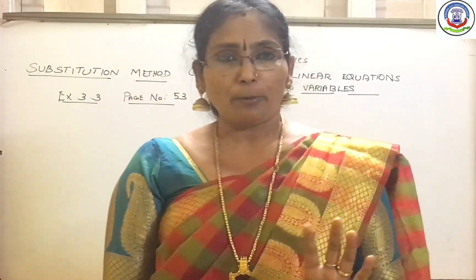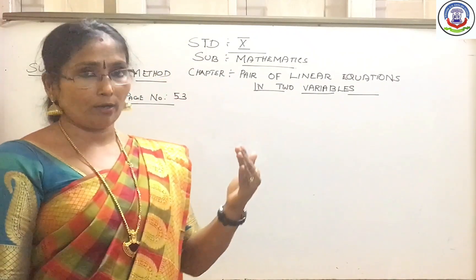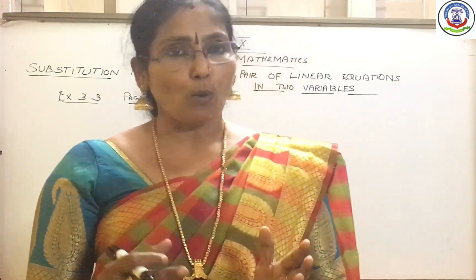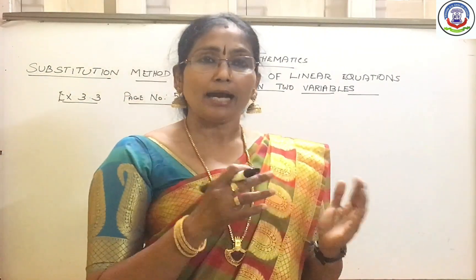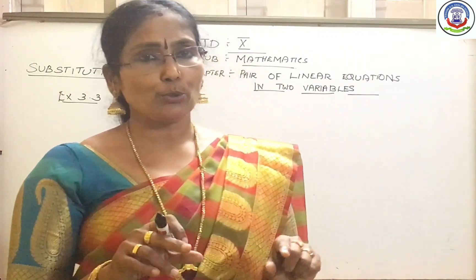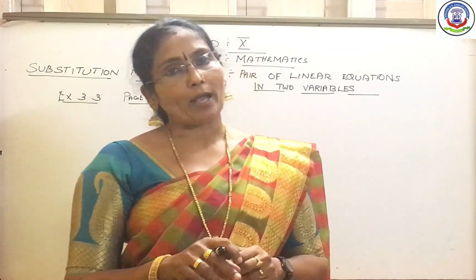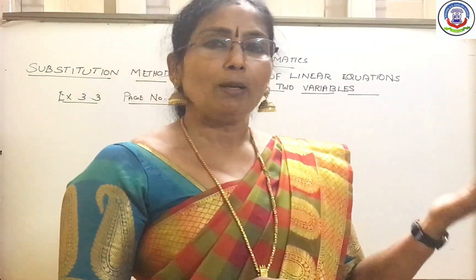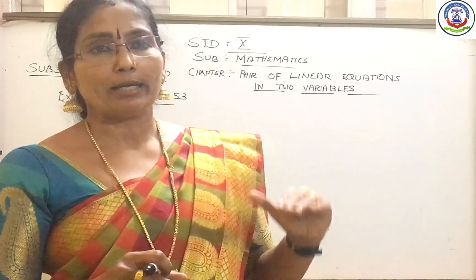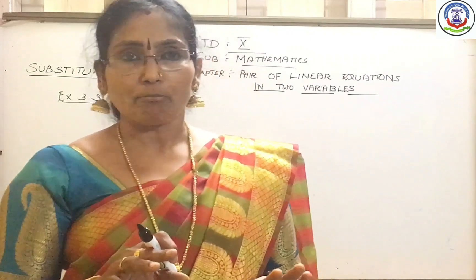In the substitution method, a pair of linear equations in 2 variables is given. The first step — just recall — is that from any one of the equations, you take the x or y value in terms of the other variable and substitute it in the second equation. Then you get a single equation in one variable and find either y or x. If you find y first, you get x afterwards; if x first, then y afterwards. I explained this with 3 examples yesterday.